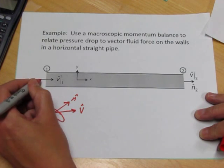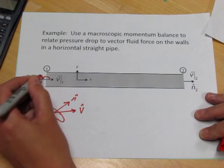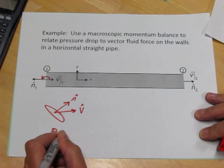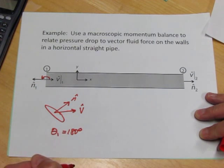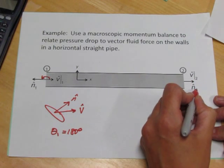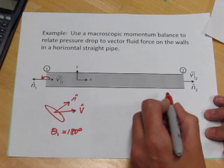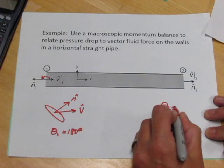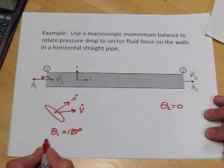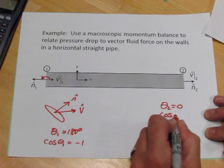So here at the inlet, the angle between the outwardly pointing unit normal and the direction of the velocity is 180 degrees. Here at the outlet, the outwardly pointing unit normal and the unit vector in the direction of the velocity are pointing in the same direction. So theta two equals zero. Cosine of 180 degrees is minus one and cosine of zero is one.